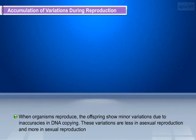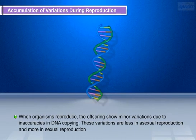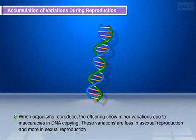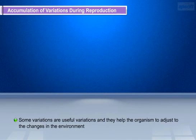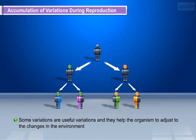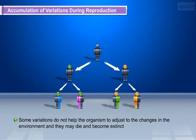Now let us discuss about accumulation of variations during reproduction. When organisms reproduce, the offspring show minor variations due to inaccuracies in DNA copying. These variations are less in asexual reproduction and more in sexual reproduction. Some variations are useful and help the organism to adjust to changes in the environment. Some variations do not help the organism to adjust to changes in the environment, and those organisms may die and become extinct.